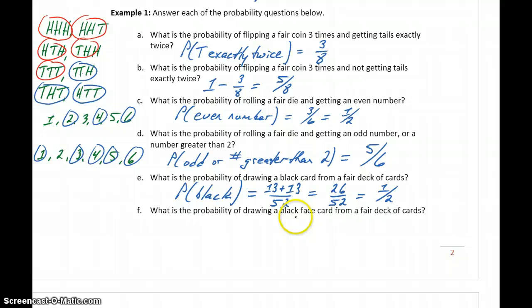What's the probability of drawing a black face card from a fair deck of cards? So we're still drawing out of 52. How many black face cards are there? Well, we have three black face cards, or three face cards that are spades, plus three face cards that are clubs, which gives us a probability of 6 out of 52, or 3 26ths.